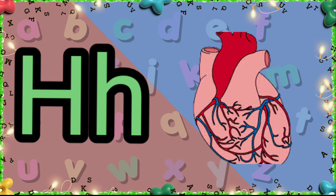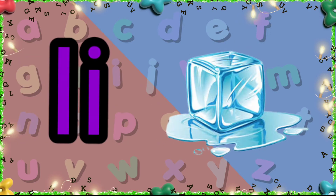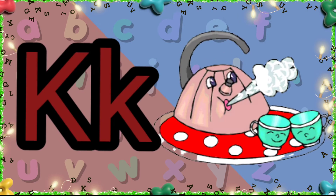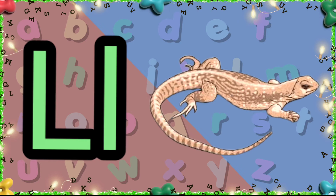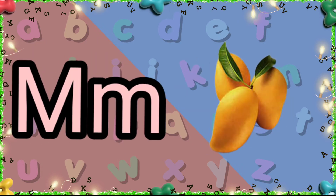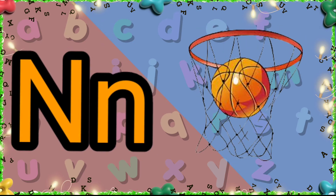H is for heart. I is for ice cube. J is for jelly. K is for kettle. L is for lizard. M is for mango. N is for net.